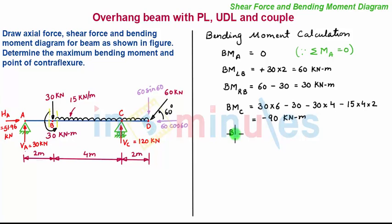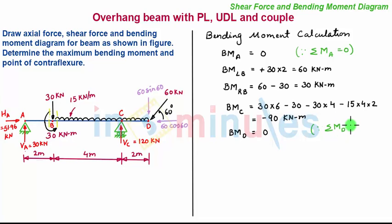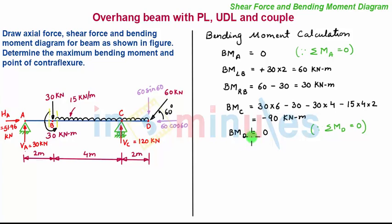Now we move towards point D. Bending moment at point D is equal to 0, since the summation of all the moments about point D is 0. Since the summation of all moments about point D represents all the moments on the left-hand side of the section, by definition it is also the bending moment about point D. So the bending moment also comes out to be 0.